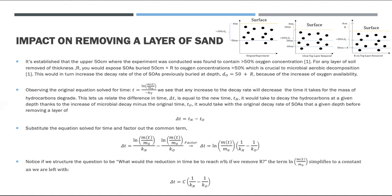We can relate the difference in time, which we signify with delta T, as equal to the new time it would take to decay these hydrocarbons, thanks to the increased microbial decay, minus the original time it would take without the help of an increase in oxygen. So substituting in the equation for time and factoring out the common expression, we get a delta T that is equal to this term.